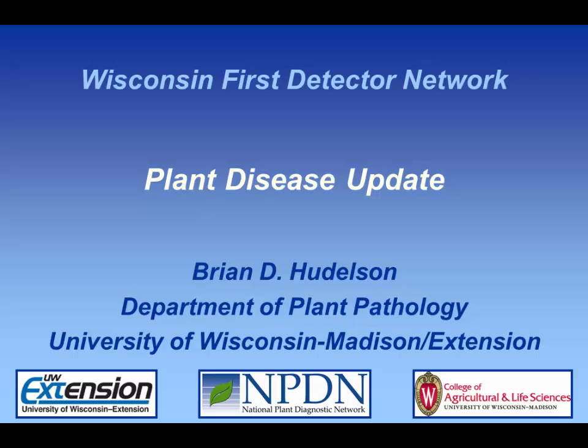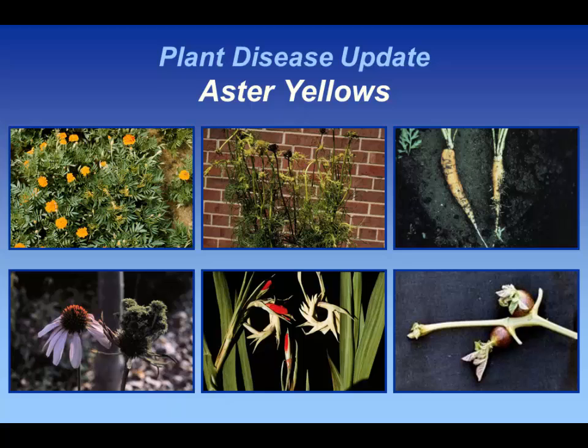Aster Yellows is another one that we see here in the state all the time. What's really interesting about this is technically you could eradicate this from the state if you watch for the symptoms and dug out the plants and destroyed them, but we have a constant chance of reintroduction because this survives in the southern United States and then the organism is moved into our area by leafhoppers, in particular the Aster leafhopper, and that again feeds on a lot of different types of plants.